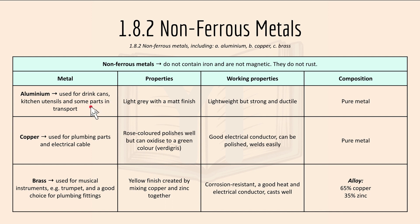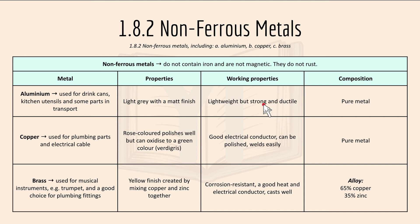Aluminium is used for drink cans, kitchen utensils and some parts in transport. Properties include a light grey matte finish, and it's lightweight but strong and ductile — meaning the metal can be drawn into wires easily. Its composition is a pure metal because aluminium is an element in the periodic table.